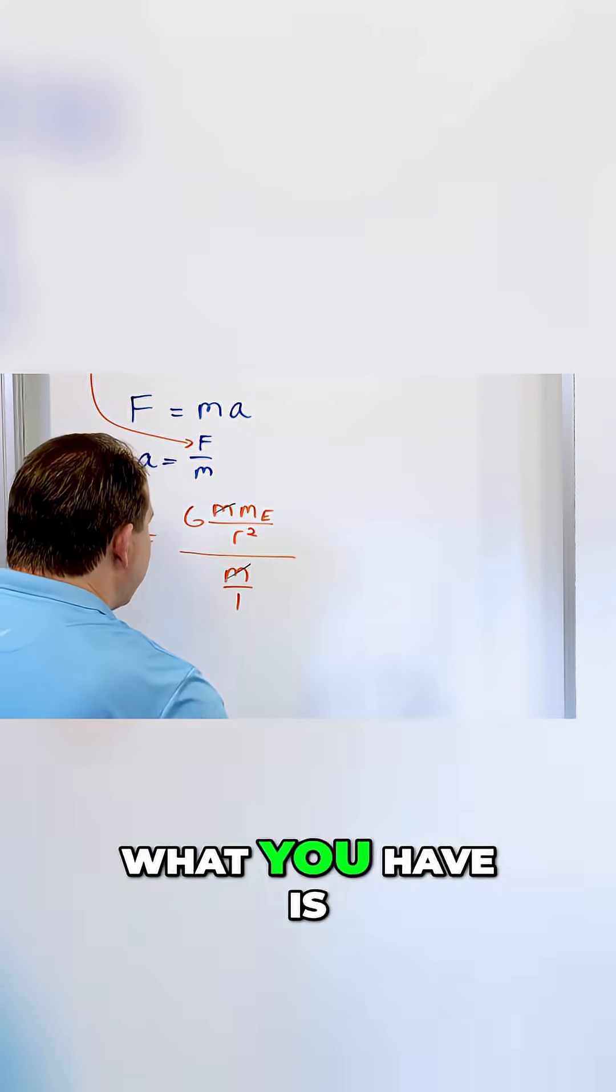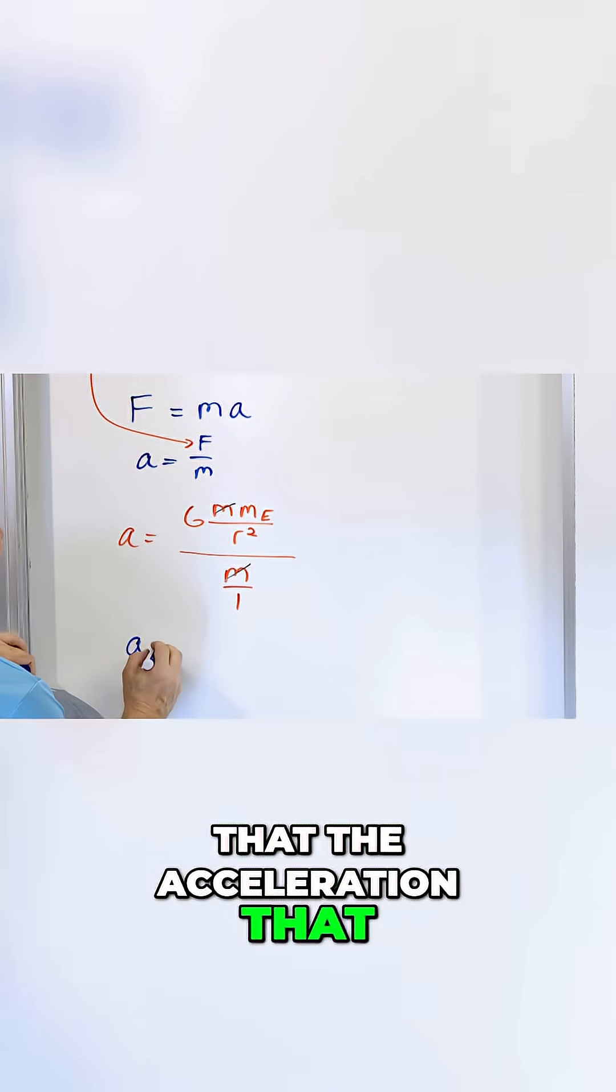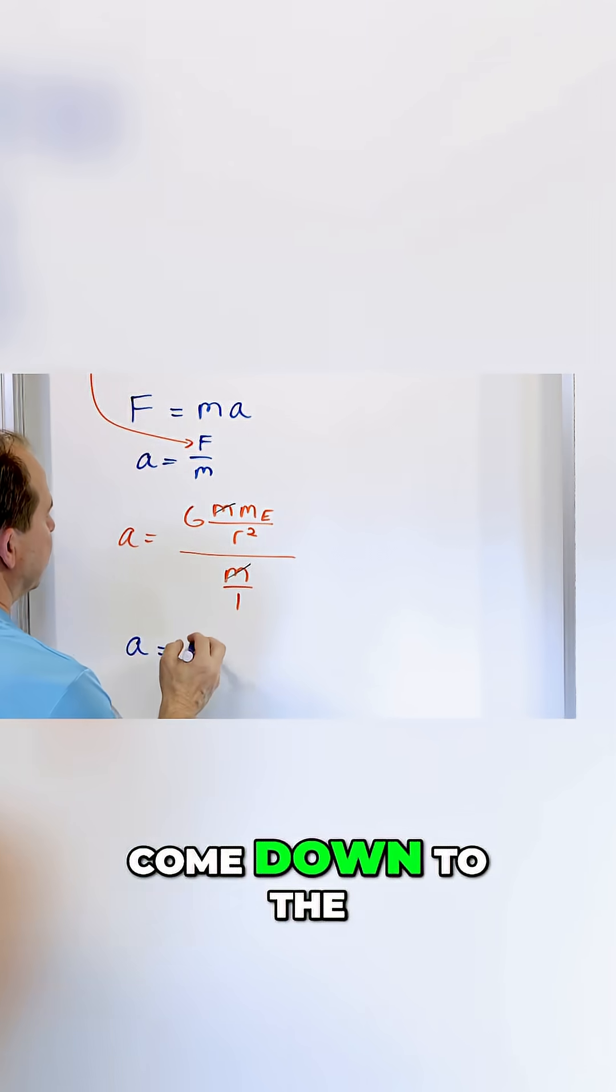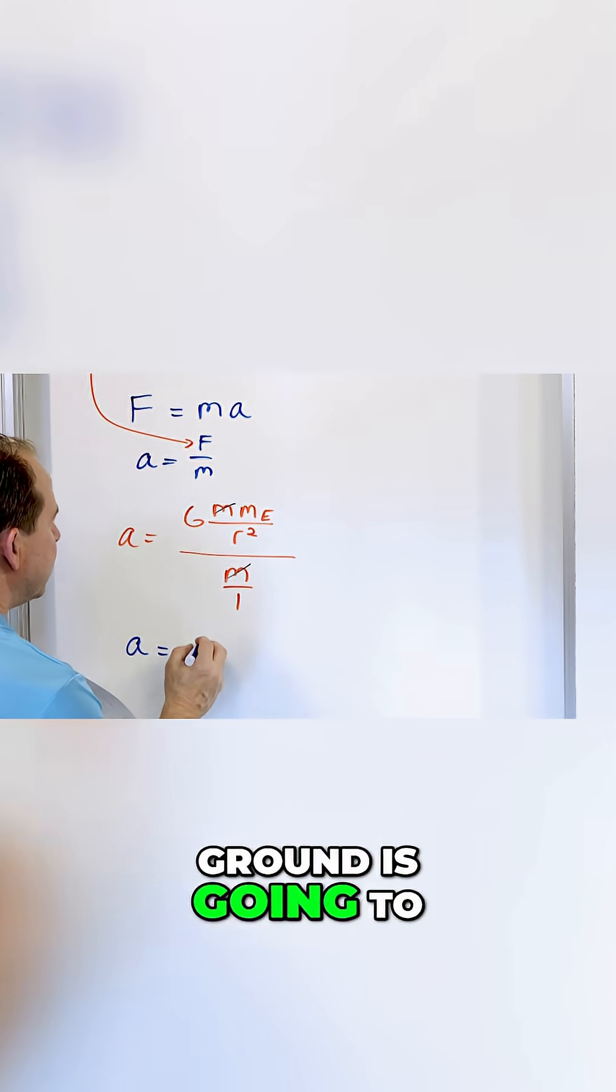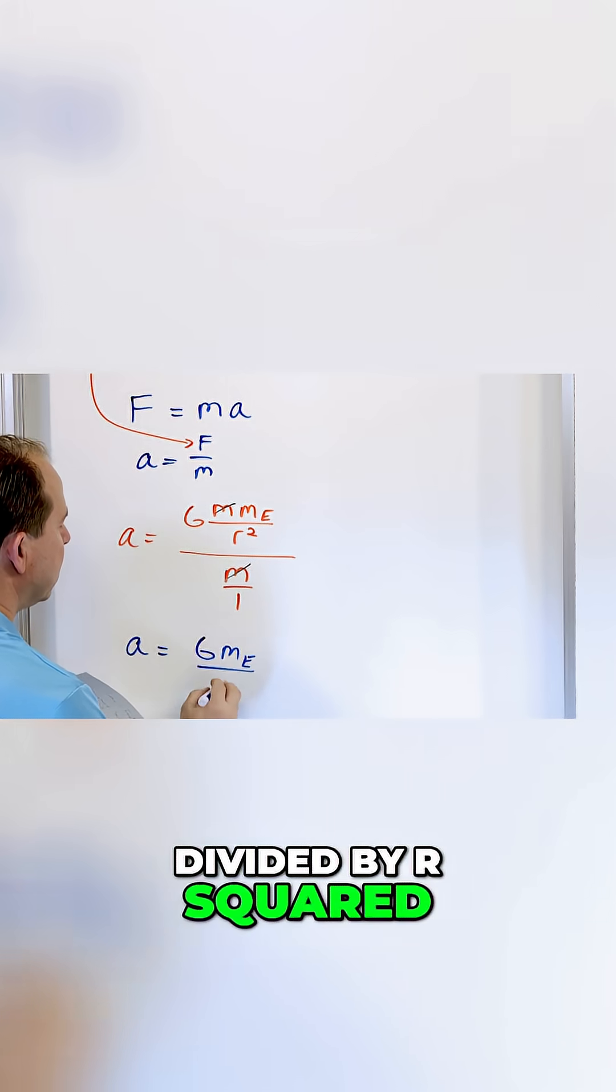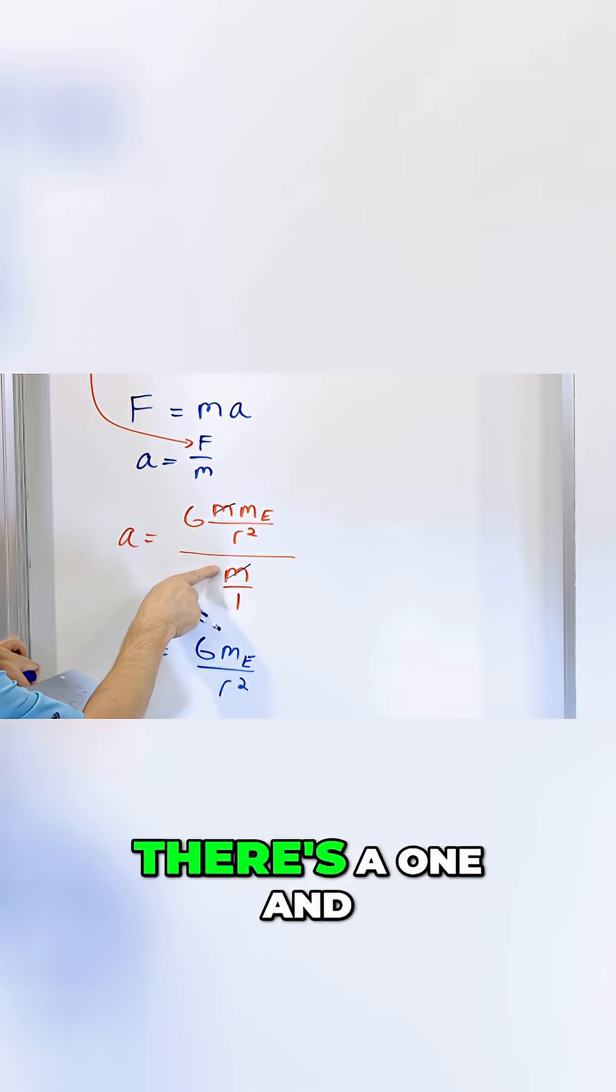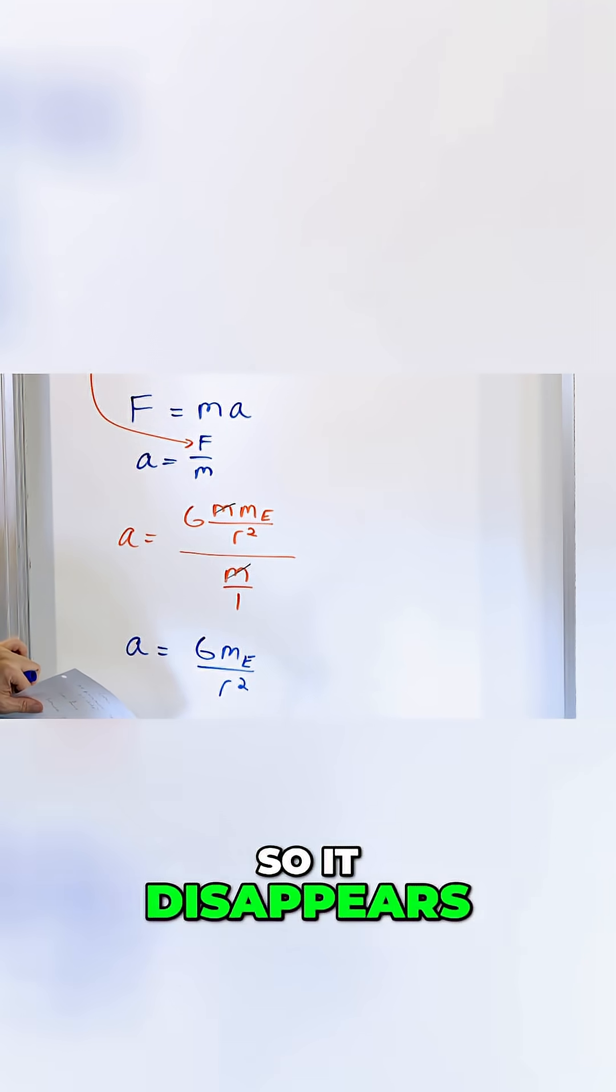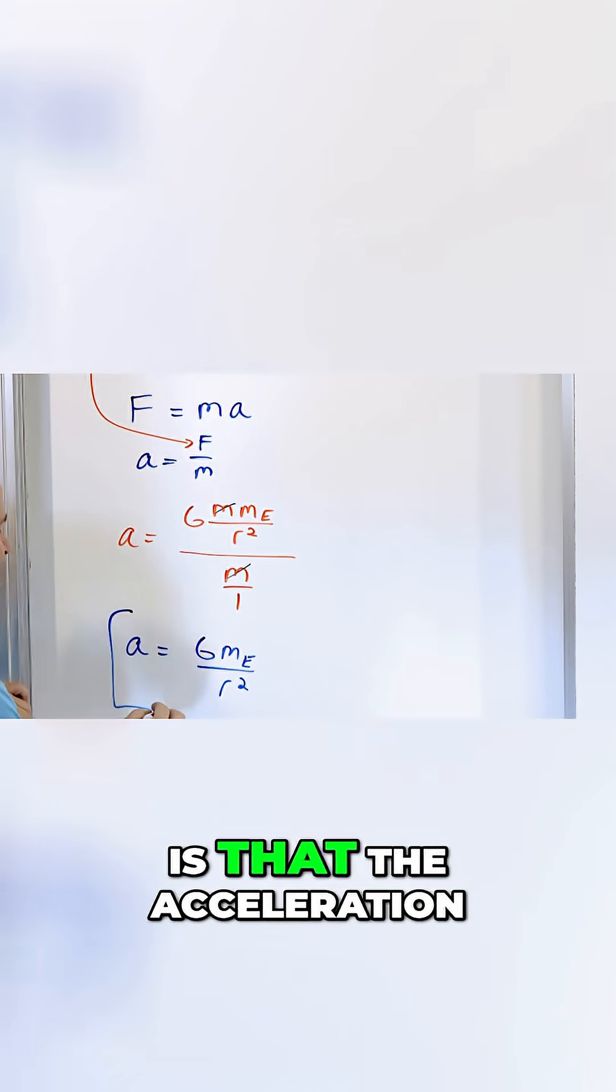And so what you have is that the acceleration that everything is going to come down to the ground is going to be G times the mass of the earth divided by r squared. But on the bottom there's nothing here - there's a one and a one, so it disappears.